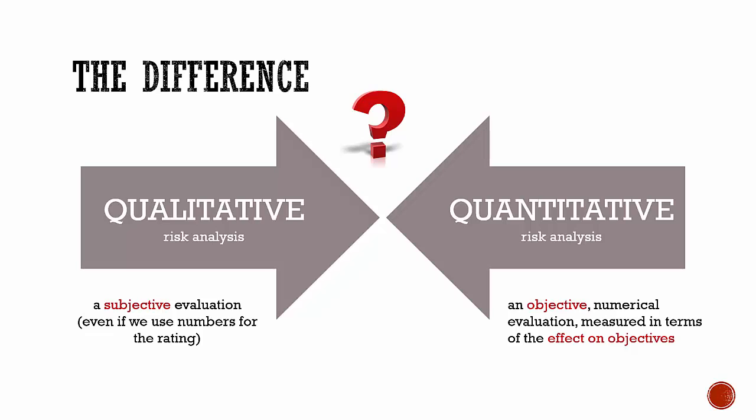For example, qualitative risk analysis says that the final rating for the risk is 45%, and quantitative risk analysis says that this risk has a $20,000 negative impact on costs. That's the difference.